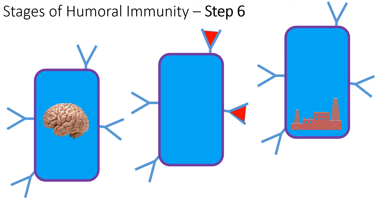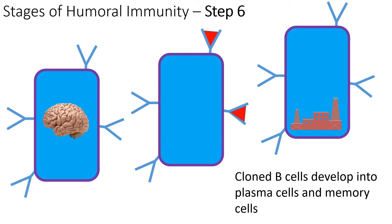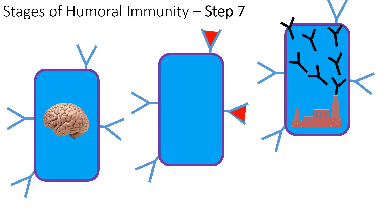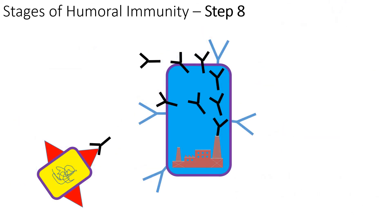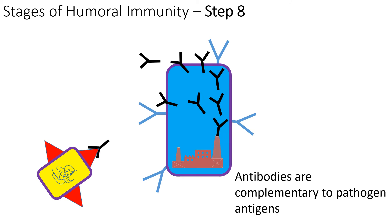In step six, we have two types of B cells produced: on the left, memory cells represented by a brain image, and on the right, plasma cells represented by a factory. In step seven, the plasma cells are responsible for producing antibodies — more specifically, monoclonal antibodies, because all of the antibodies produced are identical clones of each other.